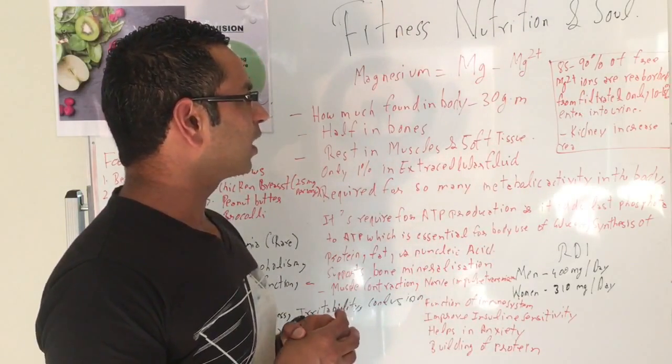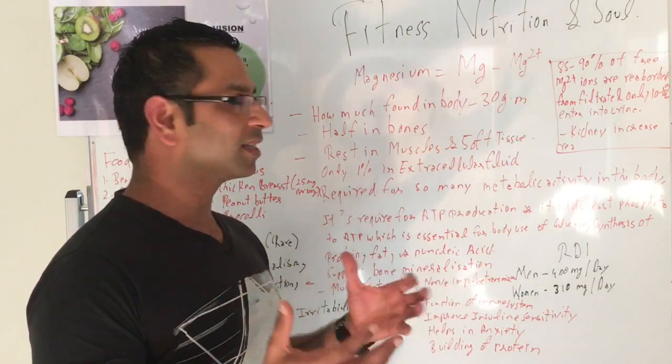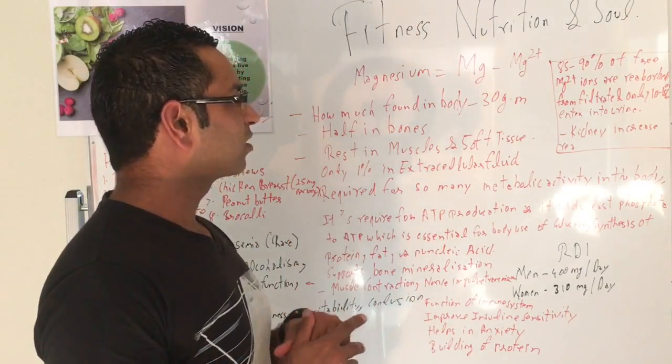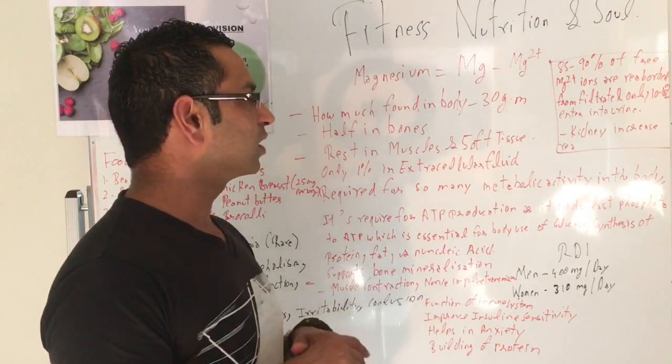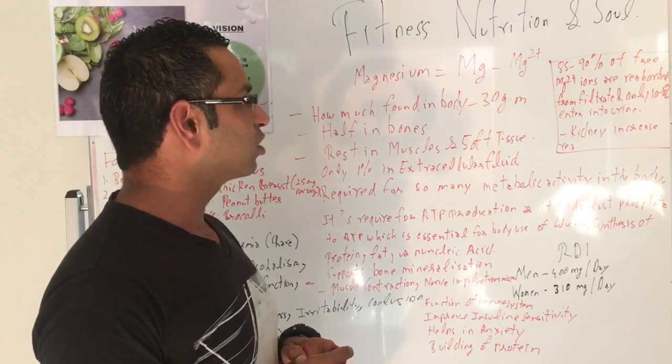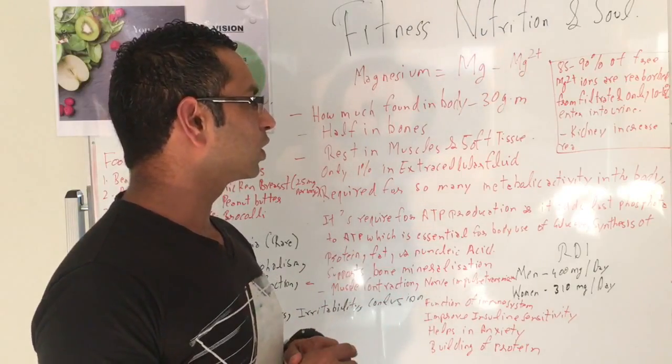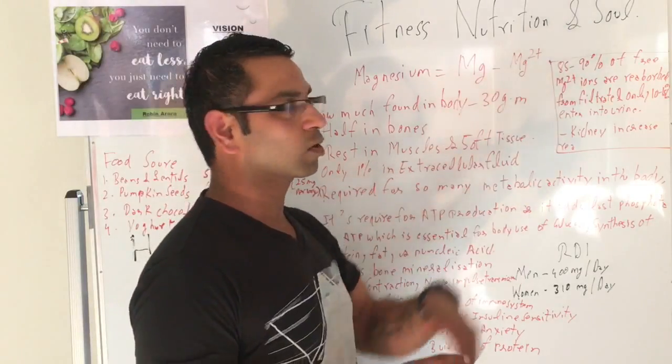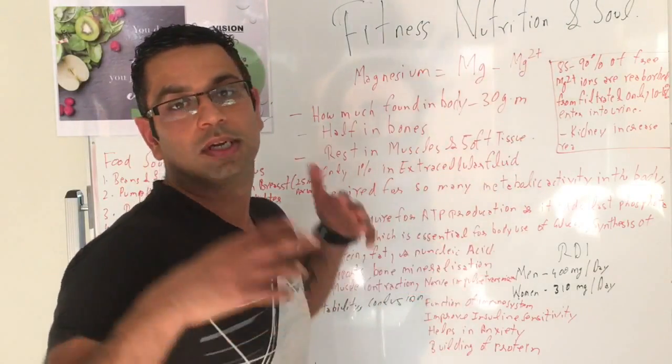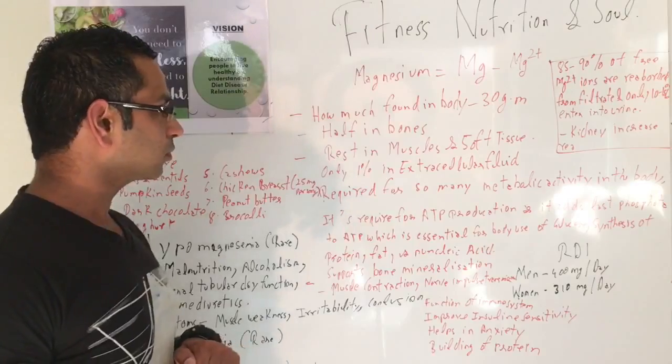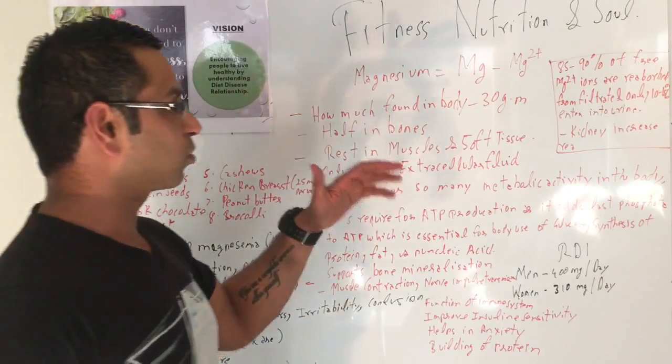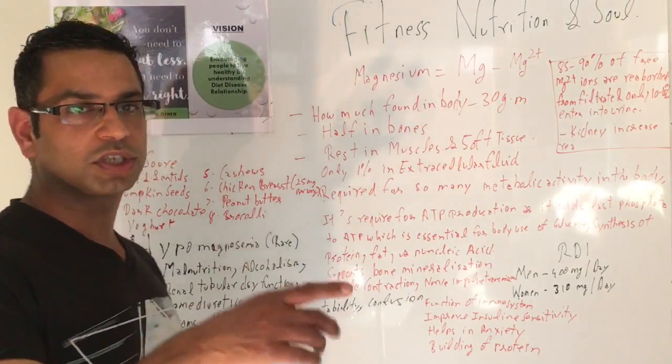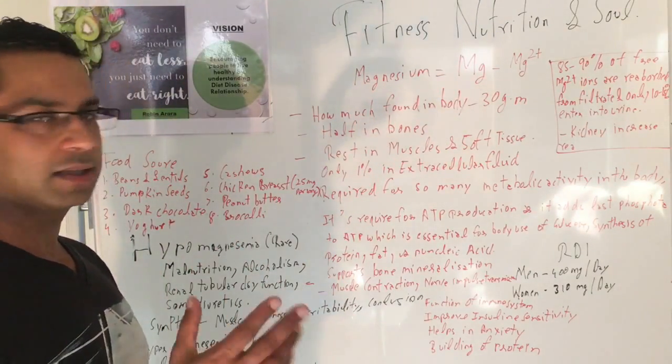Let's have a look at how much magnesium is absorbed in the body. 85 to 90% of free magnesium ion is reabsorbed from the filtrate - that means from the kidney - and only 10 to 50% enters into the urine. However, if you're deficient in magnesium, then it would not excrete anything out - it will just absorb the maximum amount. So the kidney plays a very important role in the absorption of magnesium and so many other ions as well, which includes sodium and other things.